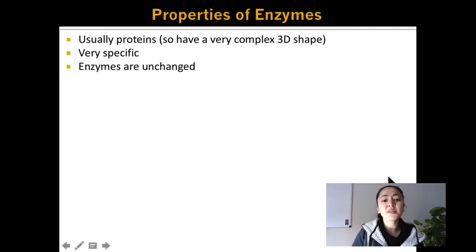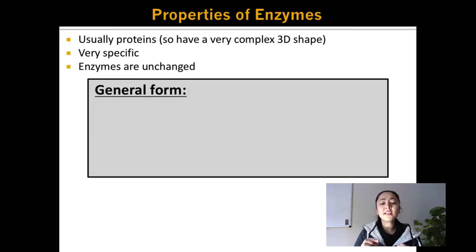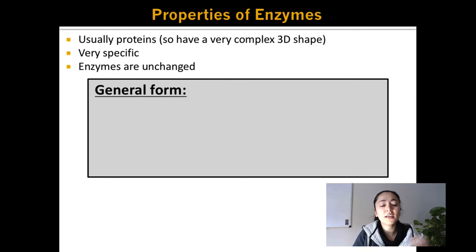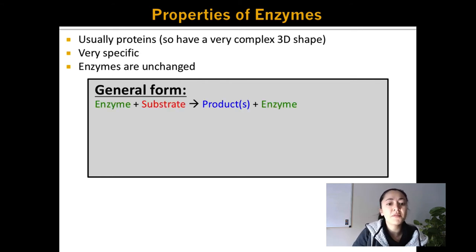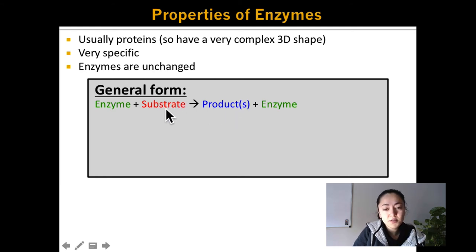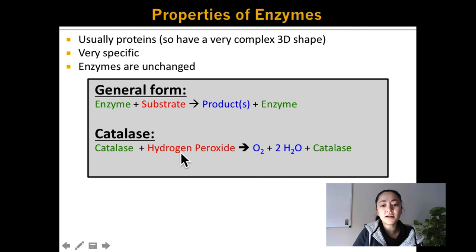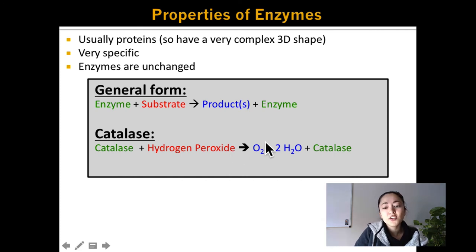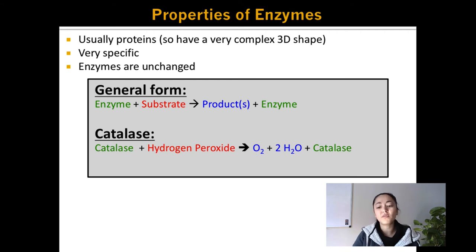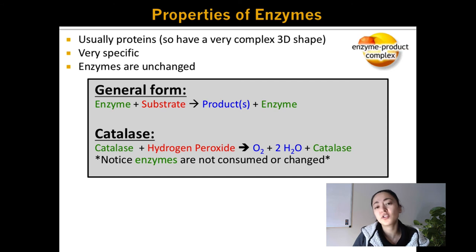Another important property of enzymes is that they're unchanged — enzymes do not change in a chemical reaction. This means you only need a very small amount of an enzyme to create a lot of product. If we look at the general equation involving an enzyme, we have the enzyme plus the substrate, which creates the product. The substrate turns into the product and the enzyme is still present at the end, not altered at all. For example, if you add catalase to hydrogen peroxide, the hydrogen peroxide turns into oxygen and water, and catalase is still there — it can be used over and over again.